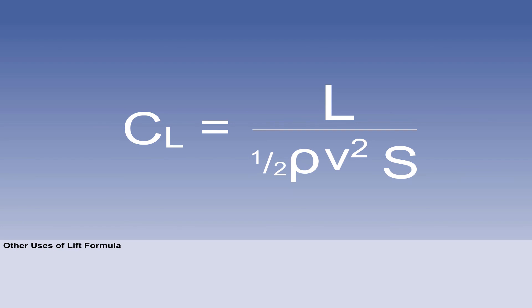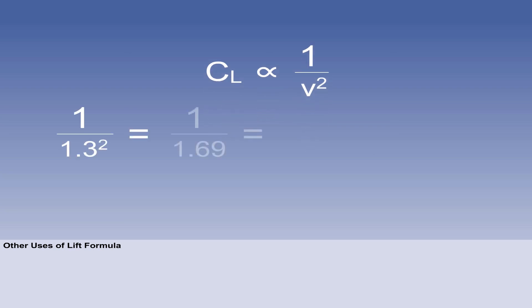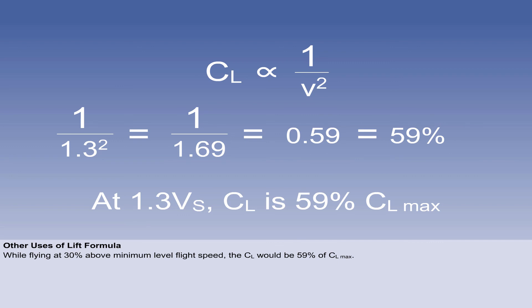Since density, lift and wing area are constant, this can be written as CL is proportional to 1 over V squared. 30% above can be written as 1.3. So 1 over V squared becomes 1 over 1.3 squared. This equals 1 over 1.69, which is 0.59 or 59%. So, while flying at 30% above minimum level flight speed VS, the CL will be 59% of CL max.